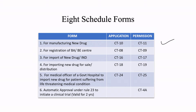If you want to register a BA/BE center, you apply through Form CT-08 and get approval through Form CT-09. If you want to import a new drug or the investigational new drug from abroad, then you have to complete Form CT-16 and you get approval through Form CT-17. If you want to import a particular drug for the purpose of sale and distribution, that has to go through Form CT-18 and the approval through Form CT-19.